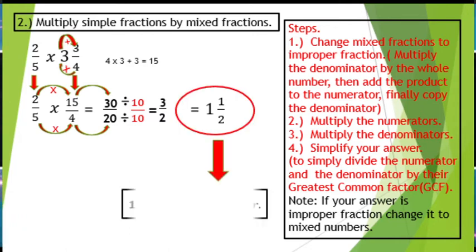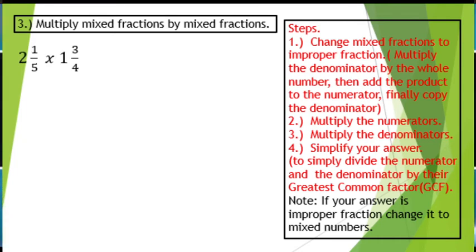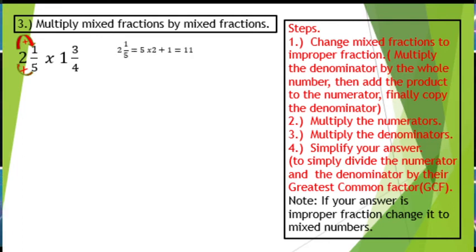Let us now go with the last one, which is multiplying mixed fractions by mixed fractions. Let us have this example. We have 2 and 1 over 5 times 1 and 3 over 4. As you can see, both factors are mixed numbers. So the first step is to change them into improper fractions. Simply multiply the denominator by the whole number and add the product to the numerator. We have 5 times 2 plus 1 equals 11. So 11 is your numerator and just copy the denominator 5, giving you 11 over 5.